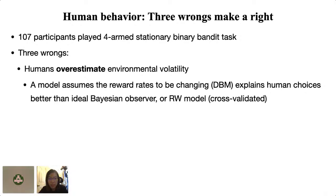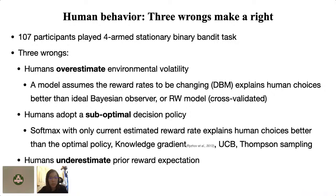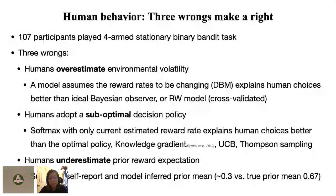This is consistent with prior studies showing humans have a tendency to assume non-stationarity by default across behavioral tasks including two-alternative forced choice, inhibitory control, visual search, and bandit tasks. Second, we found humans adopt a suboptimal decision policy — a softmax policy fits human data better than the optimal policy or other approximately optimal policies that take uncertainty into account. Third, we found humans underestimate prior reward expectation, supported by both self-report and inferred model parameters where the prior mean is reported as around 0.3 while the true prior mean used in the experiment was around 0.67. Putting them together, these three 'wrongs' make a right.